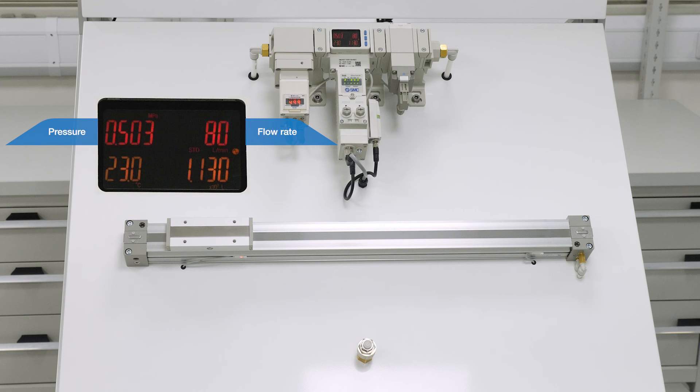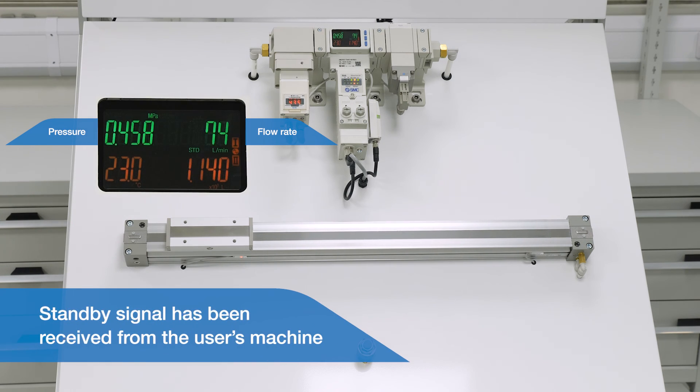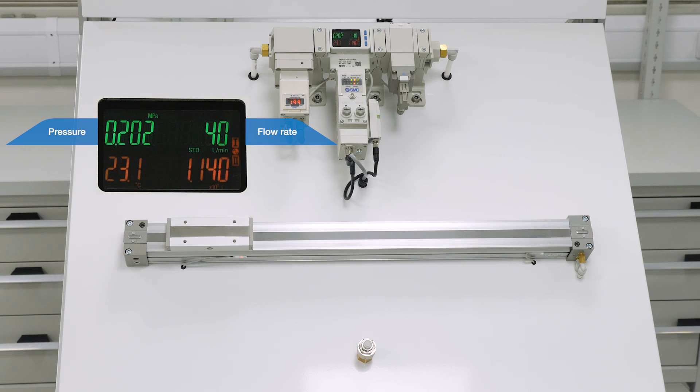Once the timer has expired, the air management system reduces the pressure to standby setting. The display text changes colour from red to green, indicating that the air management system is now in an energy saving mode. You can see the flow has dropped from what was approximately 80 litres per minute to 40 litres per minute with the reduced supply pressure.